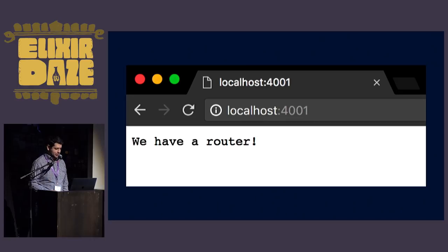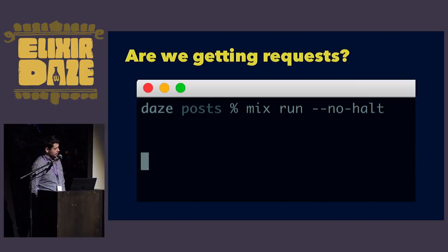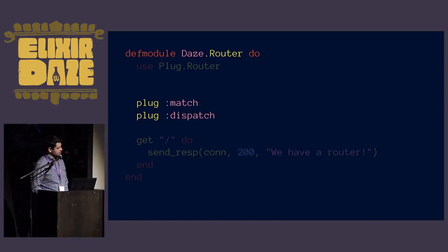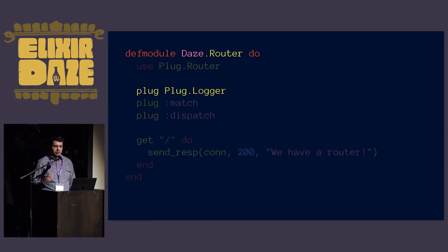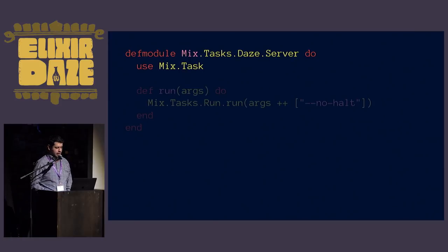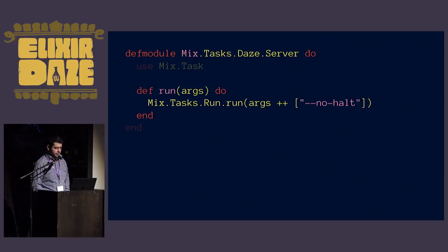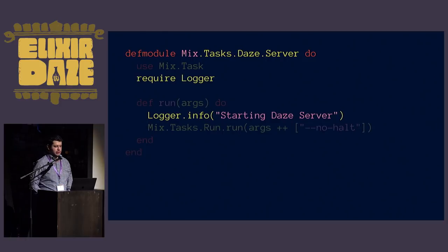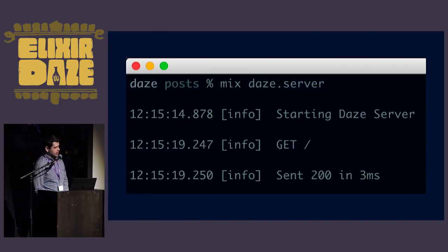This is already pretty cool, but if you look at our logs we don't know if we're getting any requests. Plug has our back and we can use Plug.Logger - it's just another plug, it satisfies the specification, and we get logging for free. One of the first things I did was get tired of typing mix run --no-halt, so we're going to define a little mix task, use the mix task, attach the no-halt flag, and add a little logging to say we're starting a Days server. Now we type mix day.server and it looks nice.